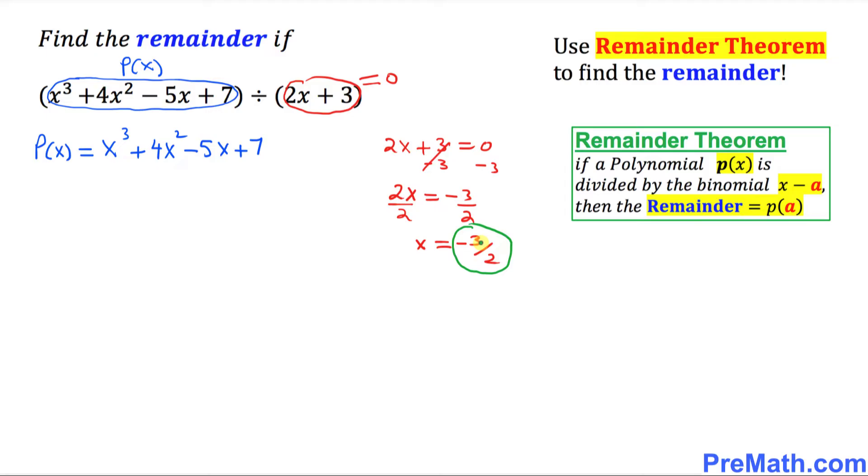So whatever this value is, wherever you see x variable, we are going to replace that value. So this is going to simply become P of negative 3 over 2 equals to,